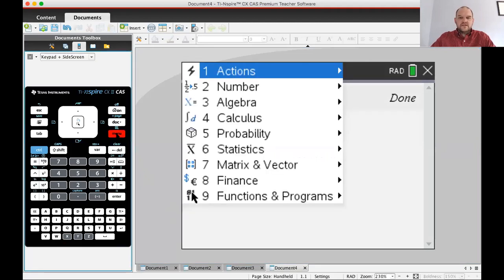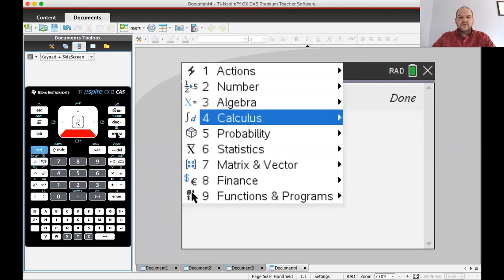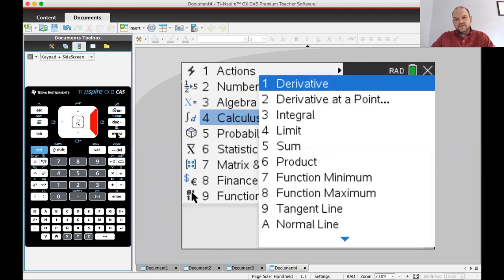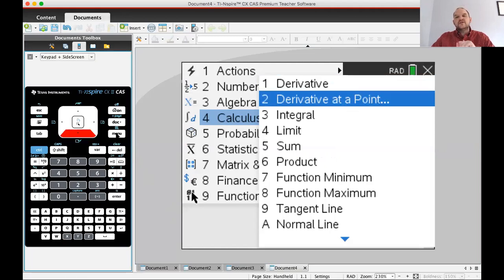Now I need to find the derivative. If you press menu and go to option four, you'll see calculus. In this menu you'll see derivative versus derivative at a point. We want the derivative at a point because it sets everything up for us.